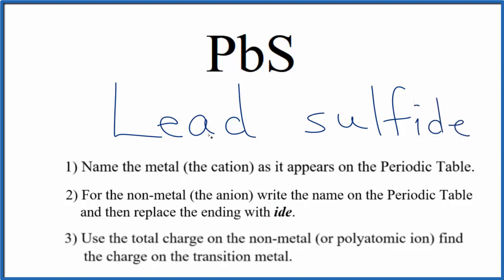So far we have the name lead sulfide for PbS, but we need to take into consideration the transition metal. We need to write the charge for the transition metal here in the name. We know that sulfur forms the sulfide ion, and that's always two minus.